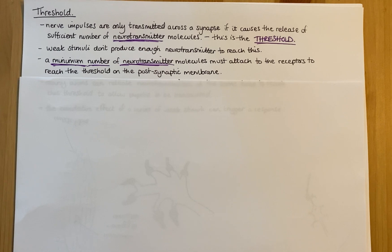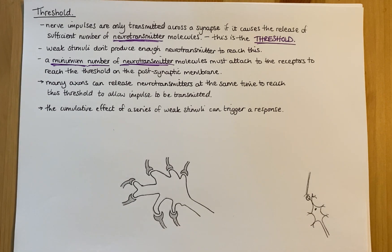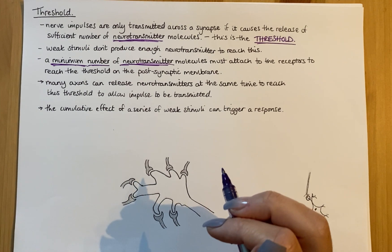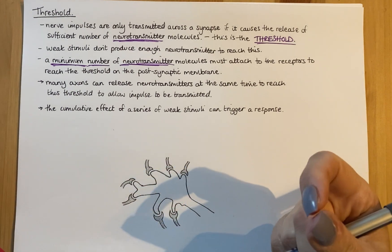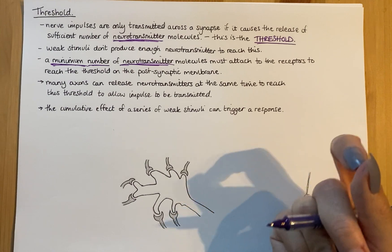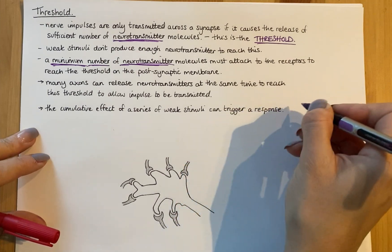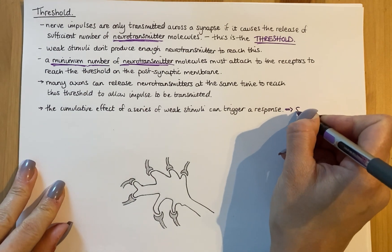This is really difficult to explain until you see a diagram, but let me explain a couple of points first. If you've got a weak stimulus, it won't produce enough neurotransmitter to reach the threshold. What you can do is have lots of axons each releasing just a little bit of neurotransmitter, which adds up to enough to meet that threshold. Adding lots of little bits together — that is known as summation.